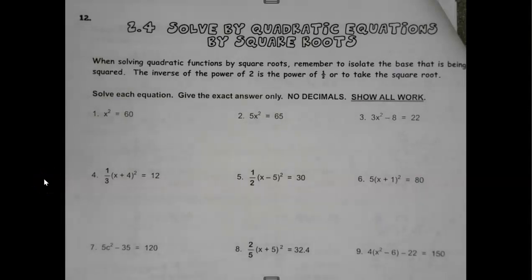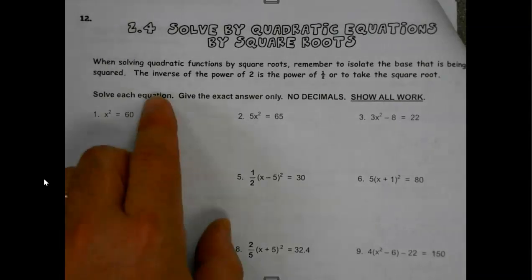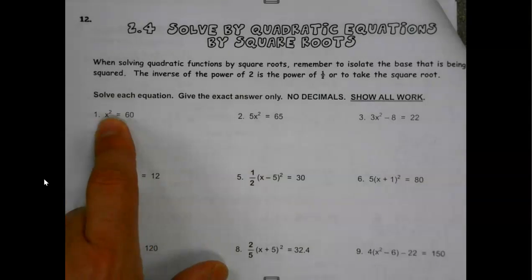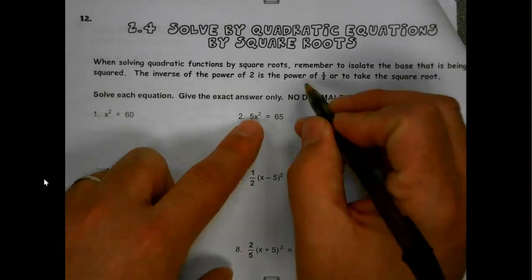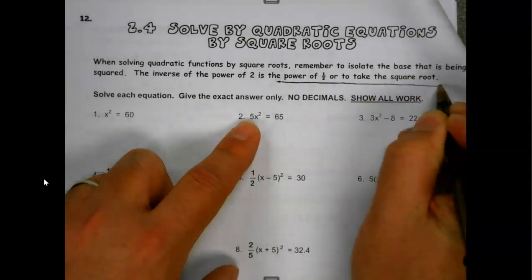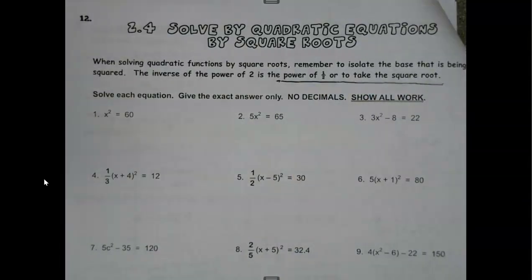We are dealing today with solving quadratics by square roots. You've got a couple of ways to tackle these. The inverse of something that's squared, something that's a quadratic, is taking the power of one-half, or if it's simpler in some cases, you just take the square root of it. We're doing inverses.